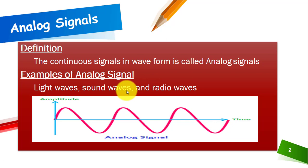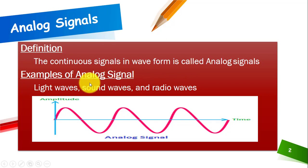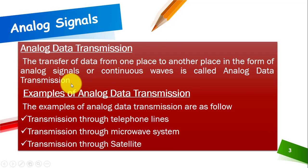Whatever we speak is a sound wave, and sound wave is an example of an analog signal. Radio transmission — whatever radio transmission you have — is also an analog signal. Light waves are also an example of analog signals.